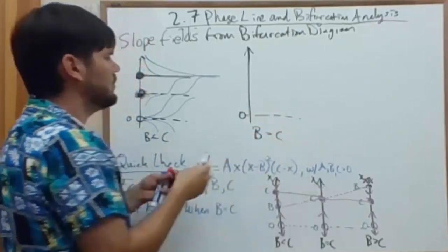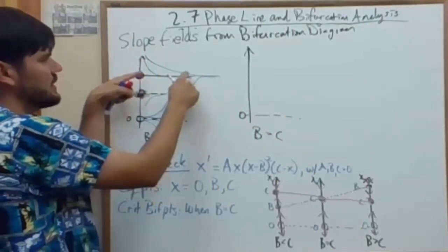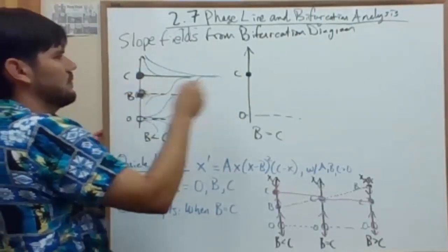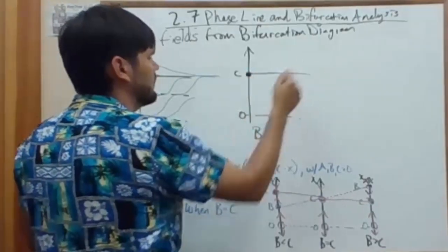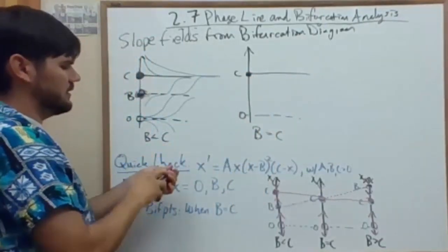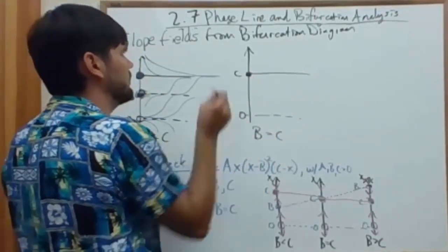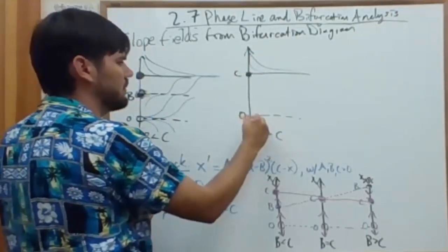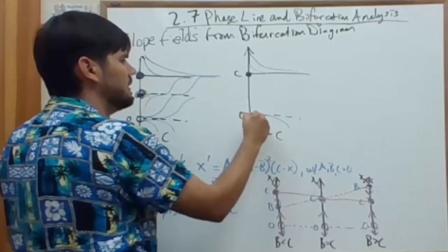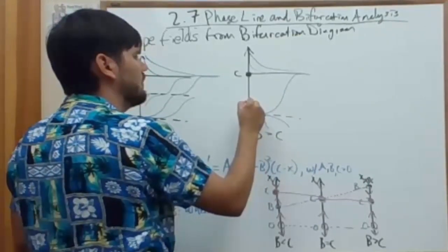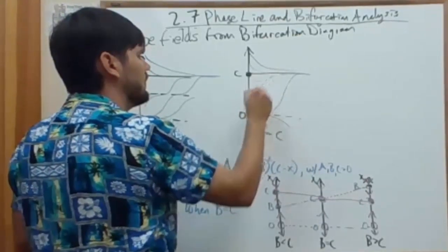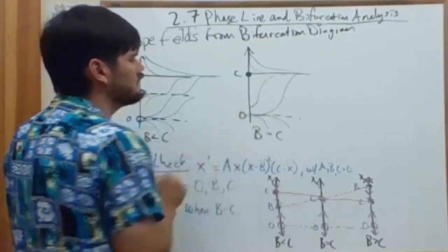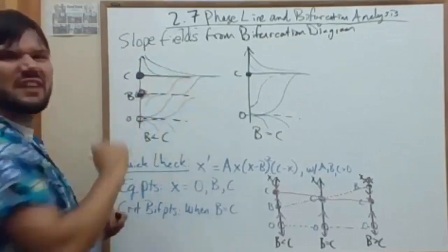When b equals c, what happens? Well, this just slides right up. And your solutions from above are the same. Solutions from below on the very bottom are the same. In between, are smoothed out a little bit.